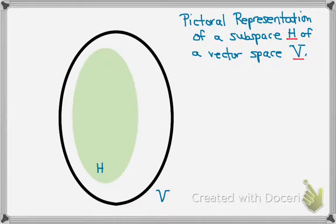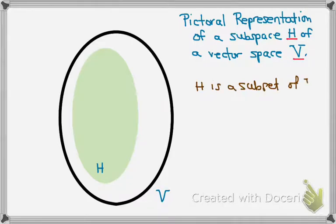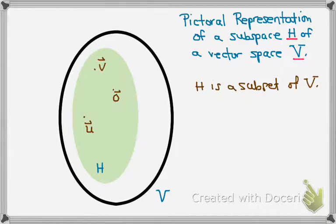Let's look pictorially at what it means for something to be a subspace of a vector space V. The larger outside ring is our vector space V, and inside of it we have H, which is our subspace. H is a subset of V, meaning it's contained within V. The zero vector must be somewhere inside H. And if vectors U and V are in H, then U plus V must also lie somewhere within H — it cannot be outside of H.